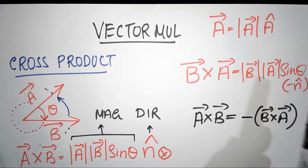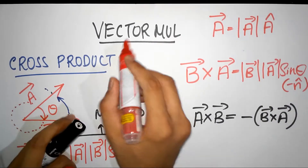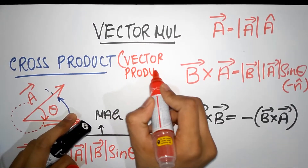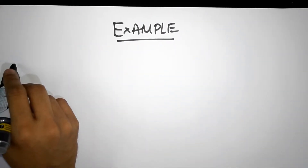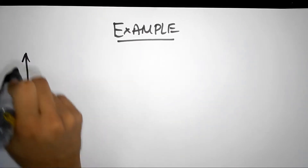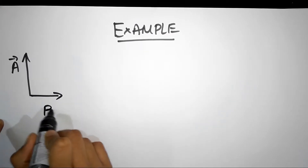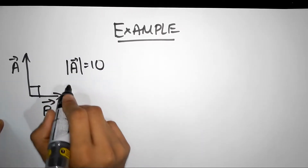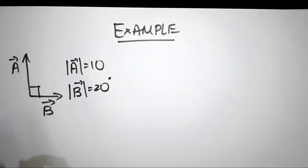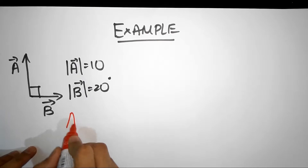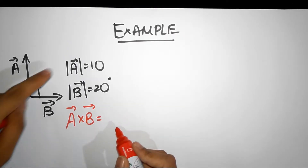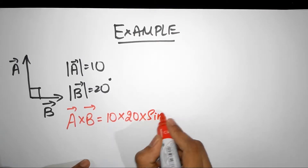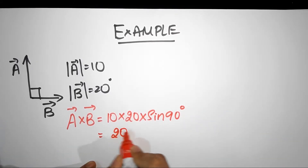The cross product result is a vector, hence cross products are also called vector products. Suppose vector A is this way and vector B is this way, with the angle between them being 90 degrees. Vector A has a magnitude of 10 units and vector B has a magnitude of 20 units. A cross B from the definition is magnitude of A — that is 10 — times magnitude of B — that is 20 — into sine of the angle between them, which is sine 90, and that turns out to be 200 times 1.